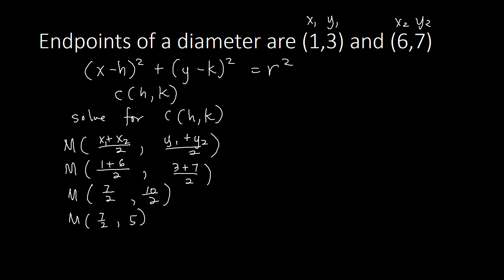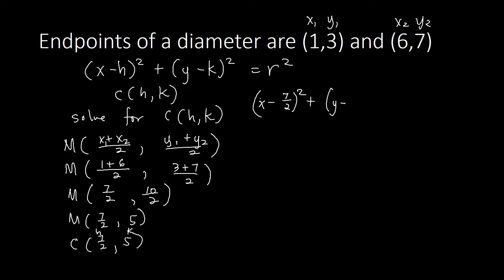Our midpoint is (7/2, 5), so that will be the center of the circle. Now let's plug that into the standard equation of the circle. With center h = 7/2 and k = 5, we have: x minus 7 over 2, squared, plus y minus 5, squared, equals r squared. This is not yet complete because we don't have r squared.